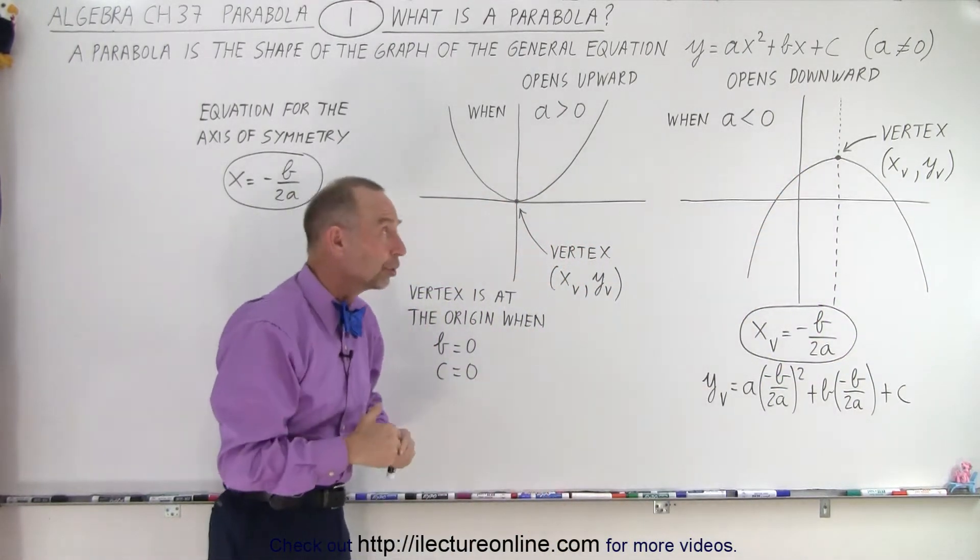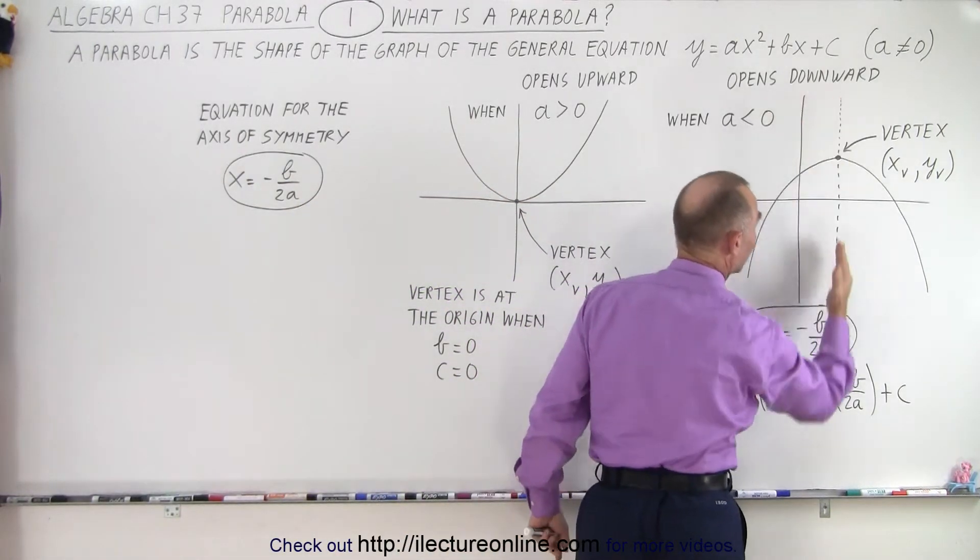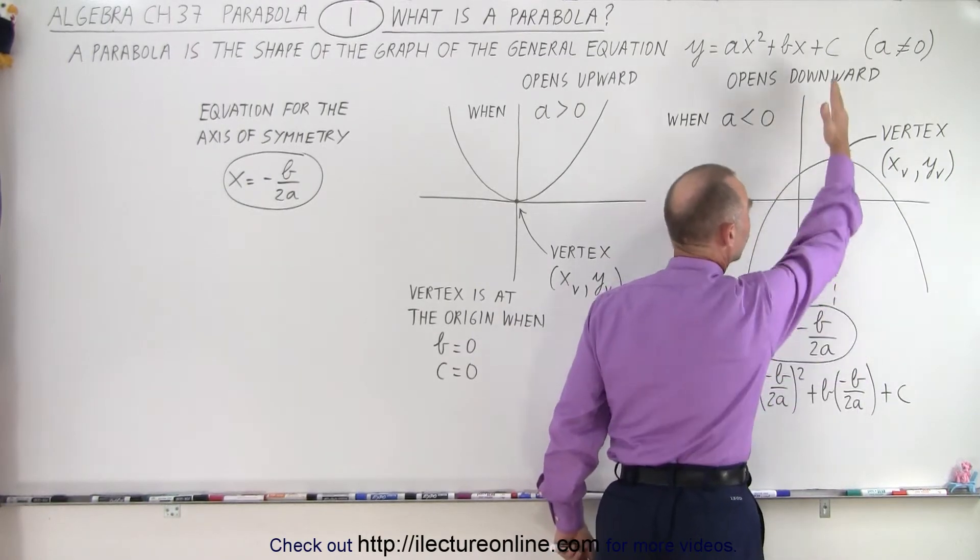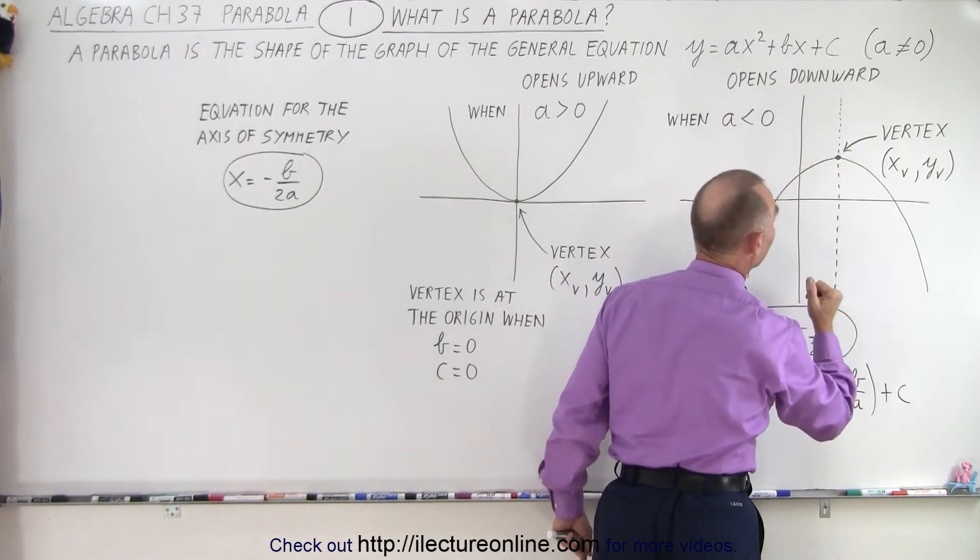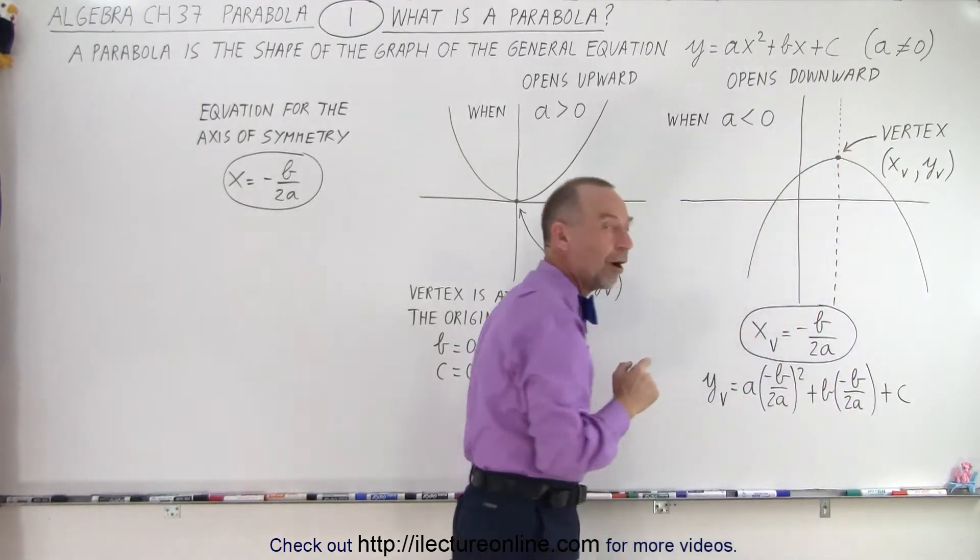It doesn't matter if the parabola opens upward or the parabola opens downward. You will have the highest or the lowest point called the vertex. Then if we draw a line through the vertex, not a perpendicular line, but a line that is straight up and down, a vertical line that goes through the vertex, then that line is called the axis of symmetry.